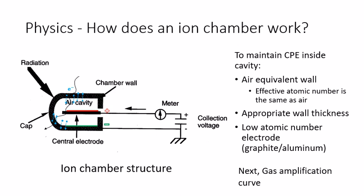This gives a current, which can be measured by the attached electrometer. This is how an ion chamber measures charge or current.